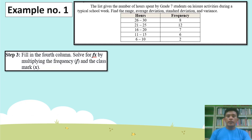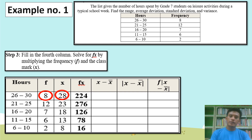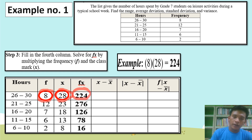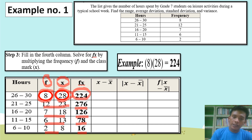Step 3: Fill in the fourth column. Solve for FX by multiplying the frequency and the class mark. So 8 times 28 equals 224. 12 times 23 equals 276. 7 times 18 equals 126. 6 times 13 equals 78. 2 times 8 equals 16. Because frequency times X gives us FX.